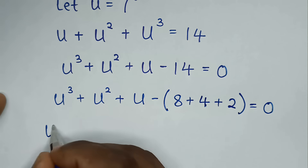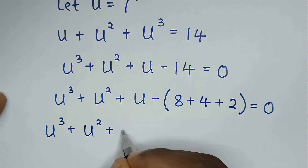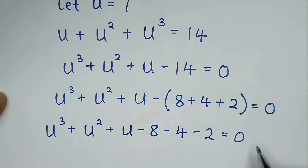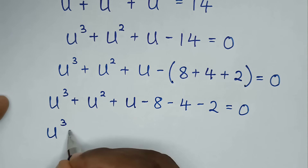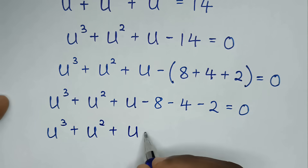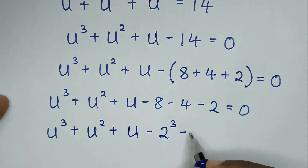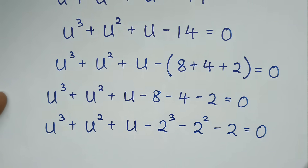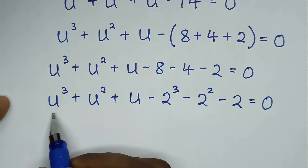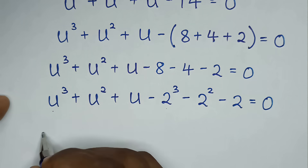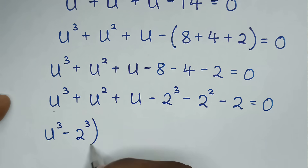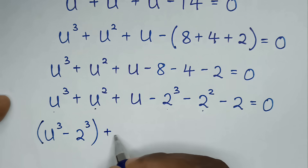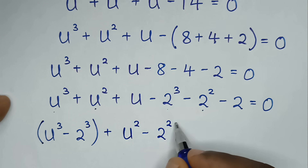Then in the next step, it will be u cubed plus u squared plus u; we take the negative inside the bracket, so it will be minus 8, minus 4, minus 2, is equal to 0. Then in the next step, with like powers we place together. So we start with u cubed minus 2 cubed, then plus u squared minus 2 squared, placed together inside the bracket.